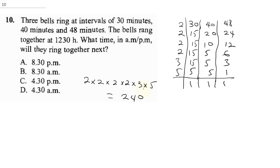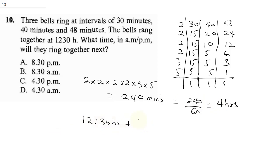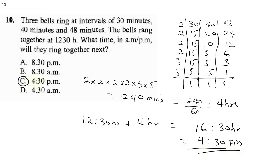Converting 240 minutes: 240 divided by 60 equals 4 hours. Adding 4 hours to 12:30 gives 16:30, which is the same as 4:30 PM. So the correct answer is C.